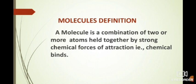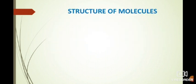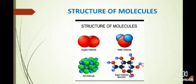For example, oxygen is a molecule because it contains two oxygen atoms, that is O2. It contains two oxygen atoms combined with a chemical bond: O, chemical bond, and O. So O2 is a molecule. Here are some examples of molecules.